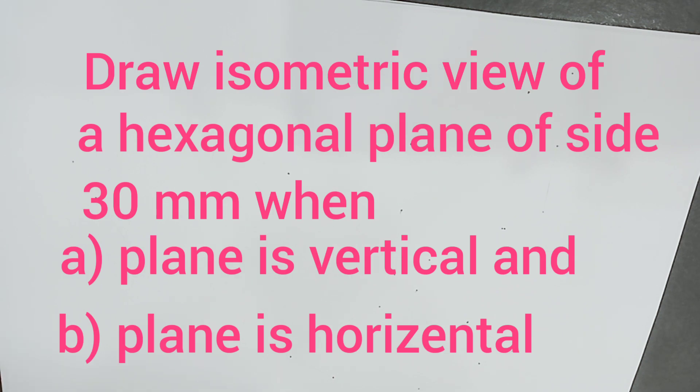Welcome to the discussion of construction of isometric view of a hexagonal plane. The given problem is: draw the isometric view of a hexagonal plane outside the given dimensions when the plane is vertical and when the plane is horizontal. The first step is to draw orthographic projections of a hexagonal plane — the front view when vertical and the top view when horizontal. First we will construct the hexagon in front view.